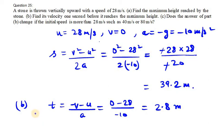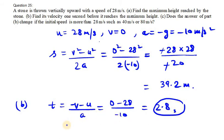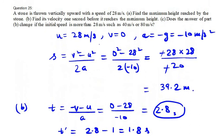Now we need to find the velocity one second before it reaches the maximum height. The total time to reach maximum height is 2.8 seconds. So the change in time will be 2.8 minus 1, which gives us 1.8 seconds. We need to find the velocity at t equals 1.8 seconds.